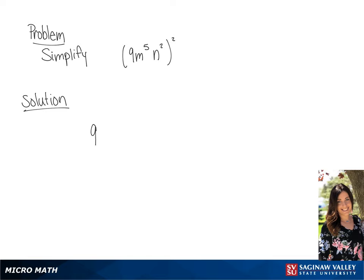We have 9m to the fifth power n squared, and all of this is going to be raised to the power of 2. So we have 9 squared, m to the power of 5 times 2, n to the power of 2 times 2.